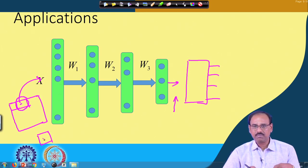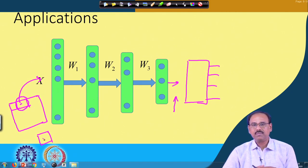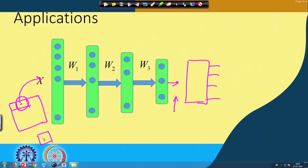The pixels of the input image are classified into different classes, and all pixels belonging to the same class form a particular segment. Today we discussed how to train a deep autoencoder using layer-by-layer pre-training, and once the autoencoder is trained, what possible applications such an autoencoder can serve. We will stop here today. Thank you.